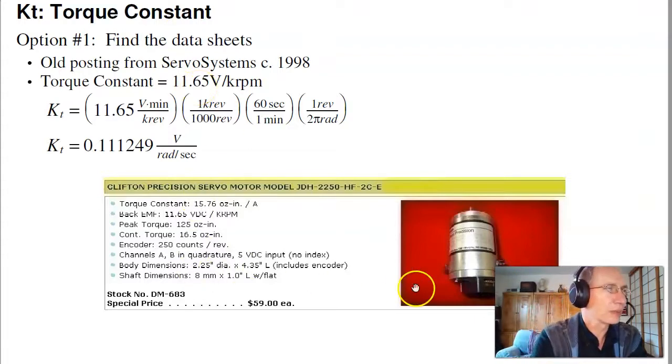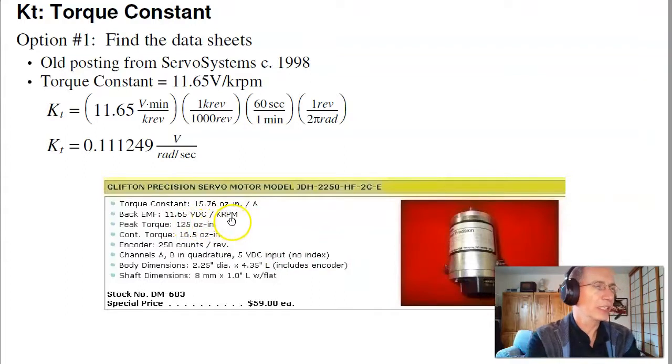The data sheets actually give this. It says your back EMF is 11.65 volts per kilo RPM. And the joys of English units, got to convert that to metric. So 11.65 volts per kilo RPM, bring the minutes to the numerator, it's volts minutes per kilo revolution. One kilo revolution is a thousand revolutions, 60 seconds is one minute, that cancels the minutes. And one revolution is two pi radians. Put that all together, and I get 0.111 volts per radian per second, or volts seconds per radian. So that's the torque constant based upon what I found on the web.